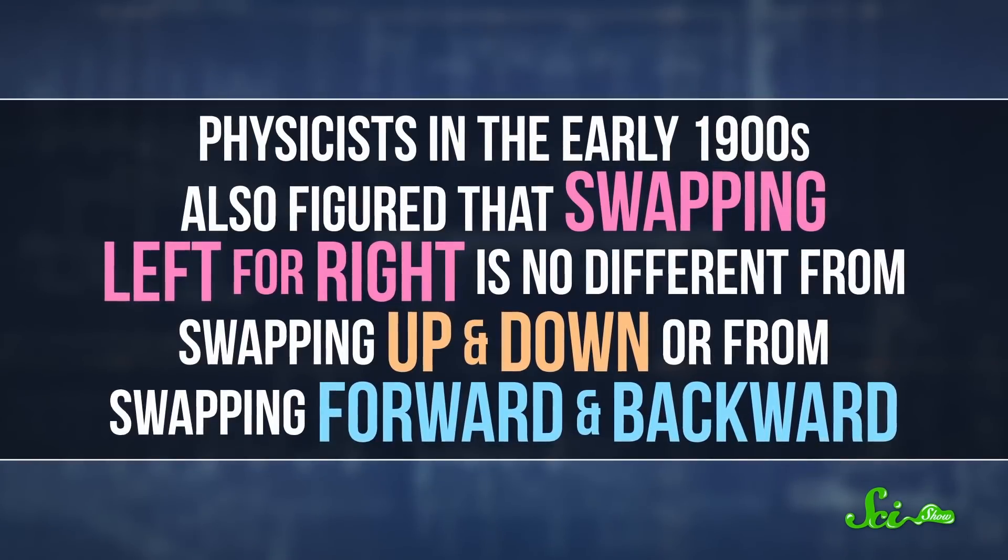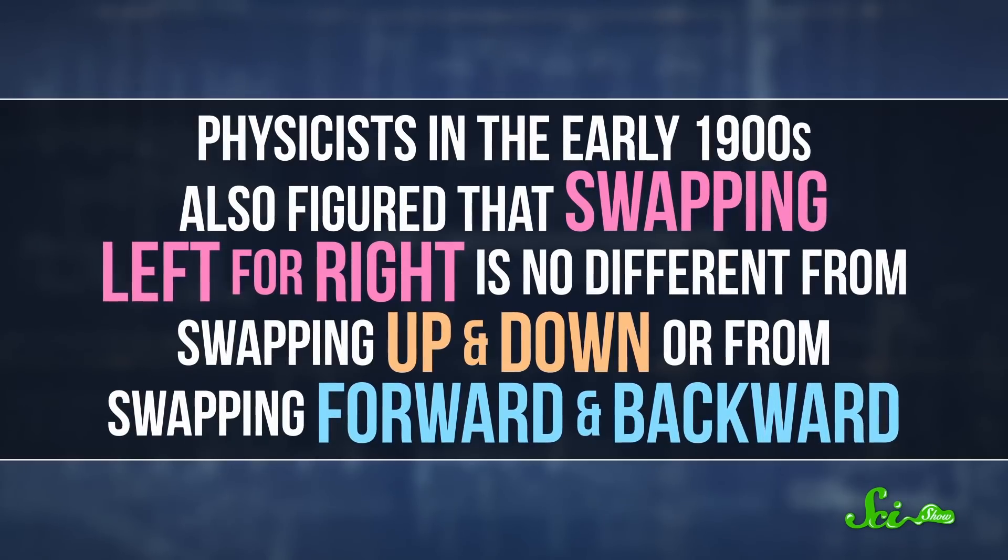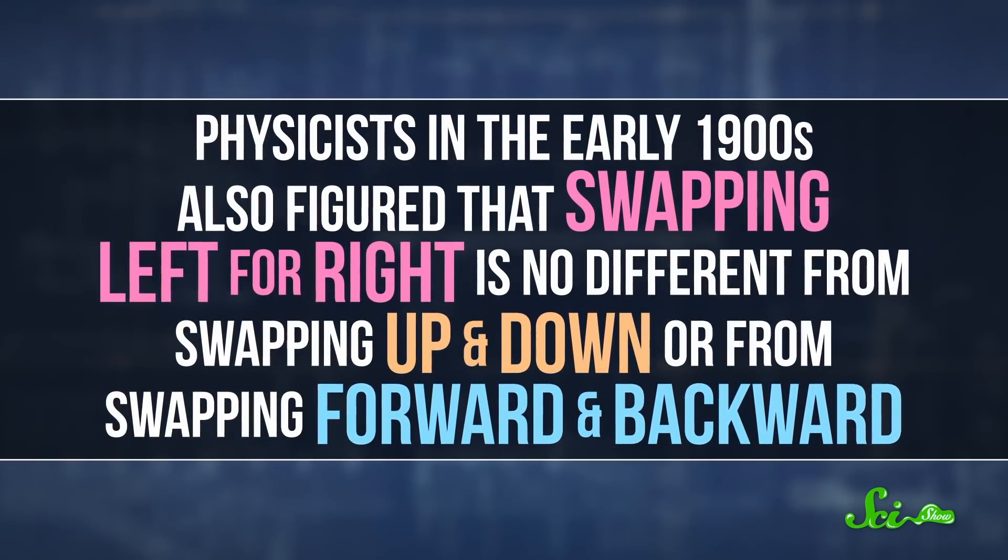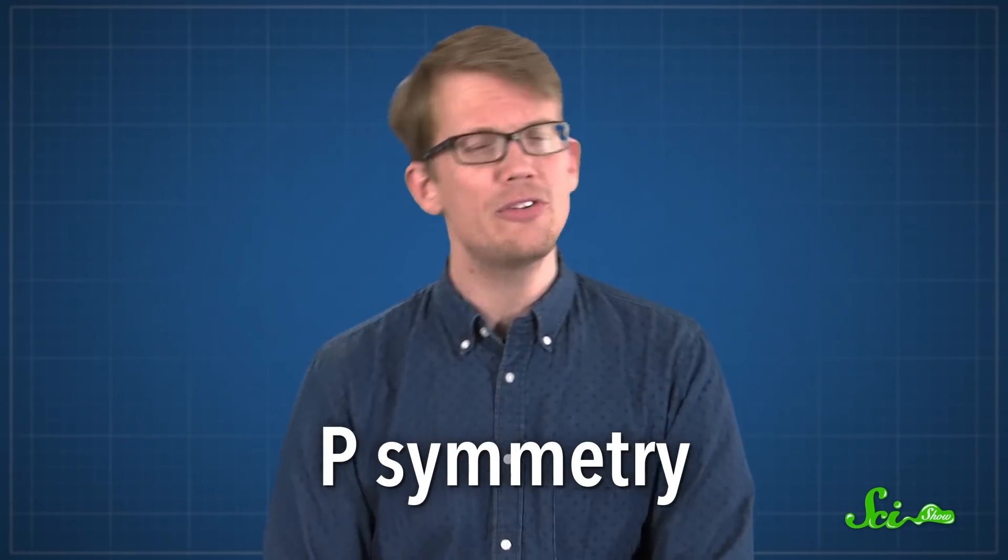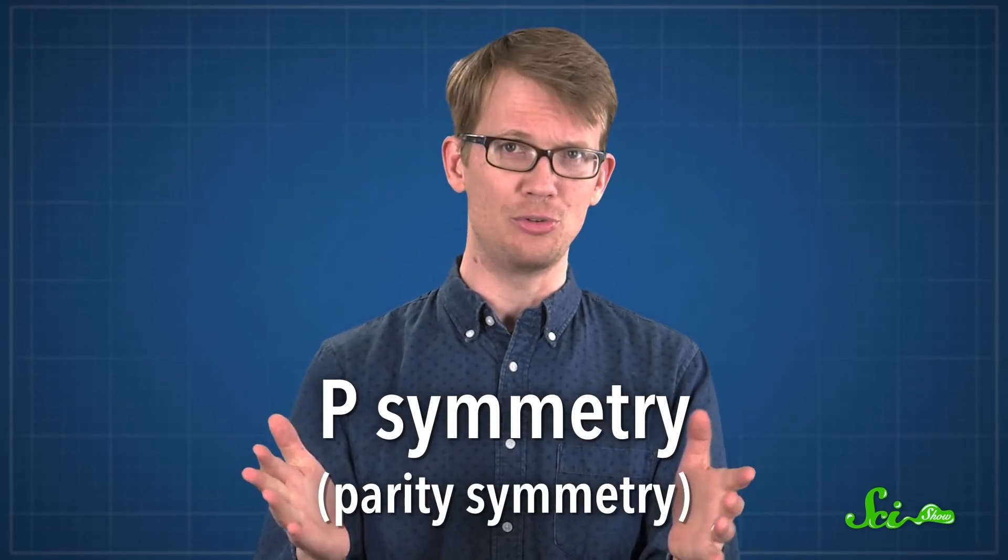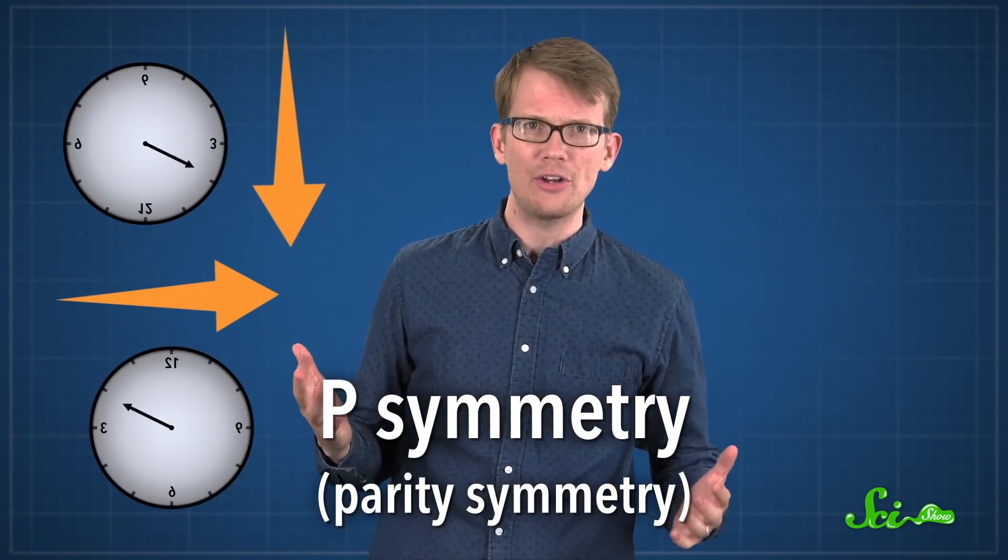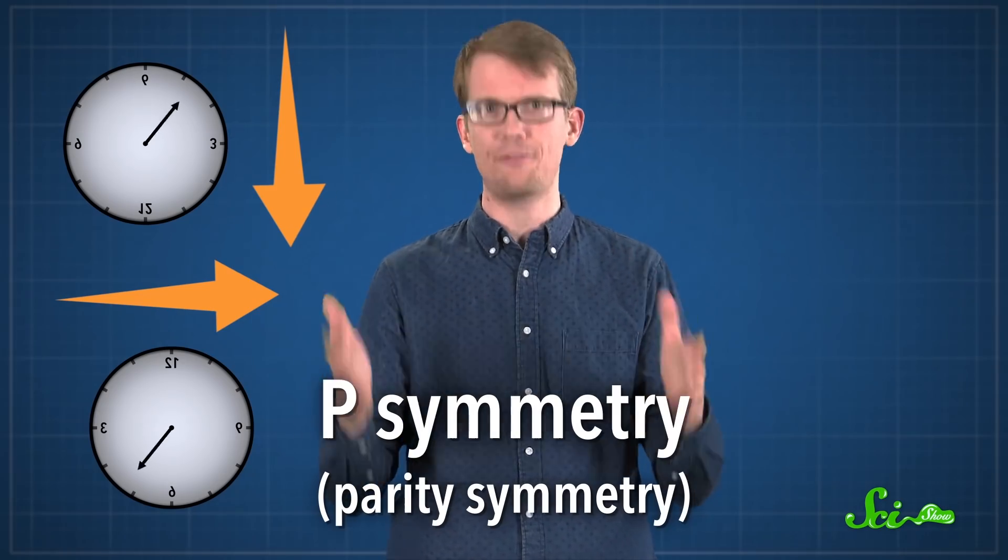Physicists in the early 1900s also figured that swapping left for right is no different from swapping up and down. You could just turn your head, or from swapping forward and backward. If all of those are symmetries, then swapping all three of them at once should be too. This is known as P-symmetry to the cool kids and parity symmetry to the rest of us. And it says that if you flip all these directions, no experiment will act differently.